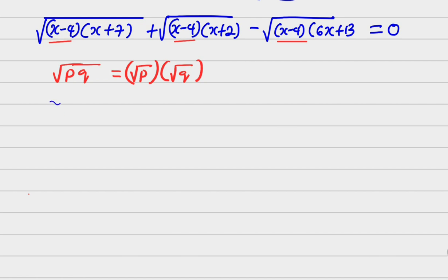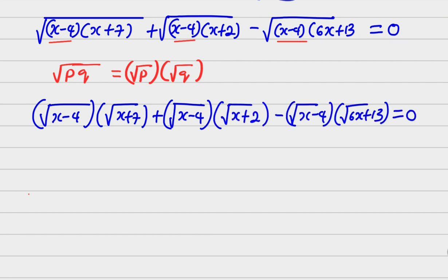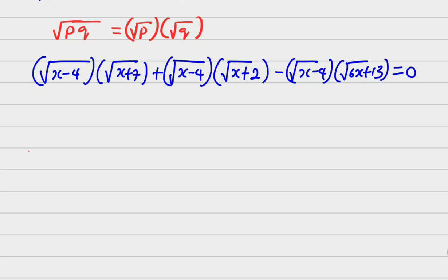...then what I'm going to do is rewrite the expression as: root of (x minus 4) squared, into root of (x plus 7), plus root of (x minus 4), into root of (x plus 2).